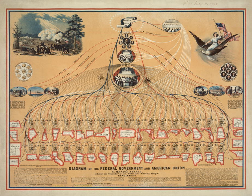The United States Government is based on the principles of federalism and republicanism, in which power is shared between the federal government and state governments. The interpretation and execution of these principles — including what powers the federal government should have and how those powers can be exercised — have been debated ever since the adoption of the Constitution. Some make the case for expansive federal powers while others argue for a more limited role for the central government in relation to individuals, the states, or other recognized entities.